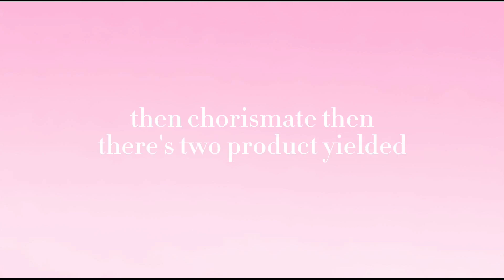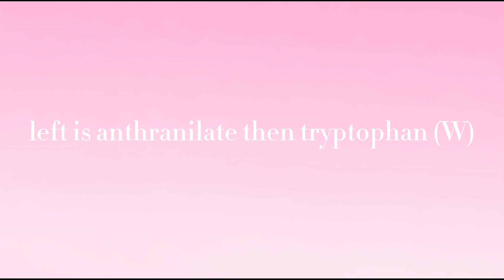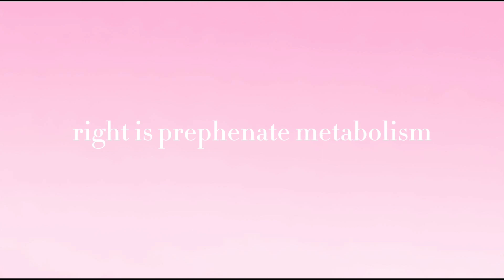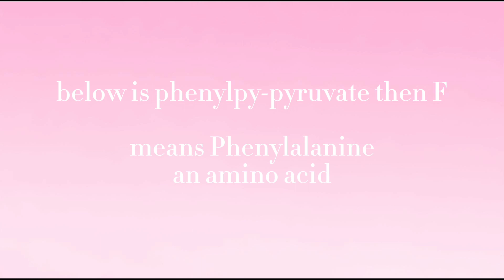The chorismate is made, then that's too proud — I killed it. Love is anthranilate, then tryptophan. Red is prephenate, metabolizing — dehydroquinate, prephenate. L is phenylalanine, an amino acid.